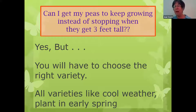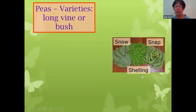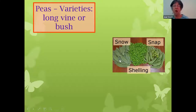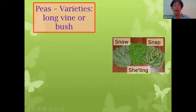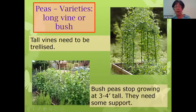Can I get my peas to keep growing instead of stopping when they're only three feet tall? Yes, but you have to choose the right variety. All peas like to start in cool weather so you can plant them early in the spring. These flat ones are called snow peas, the edible pod peas with big fat pods are called snap peas, and the ones where you pop the peas out are called shelling peas. All of these can be grown on a long tall vine or on short bush peas — check your seed packet to see which type you have.